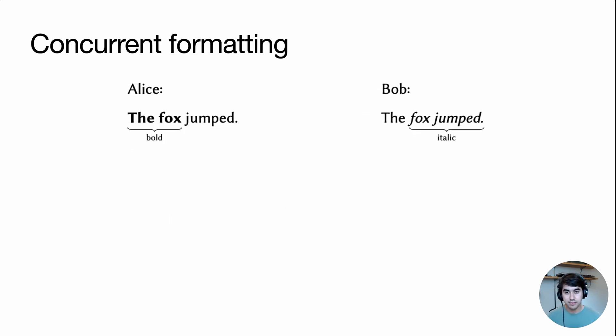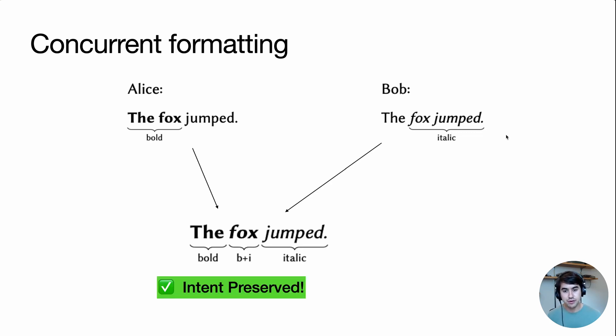Let's consider another example where two users concurrently apply formatting to the same document. Here, Alice bolds these two words and Bob italicizes these two words. In this case, the merge result is pretty straightforward. Because bold and italic can both exist on the same characters, we can have the middle word fox be both bold and italic.